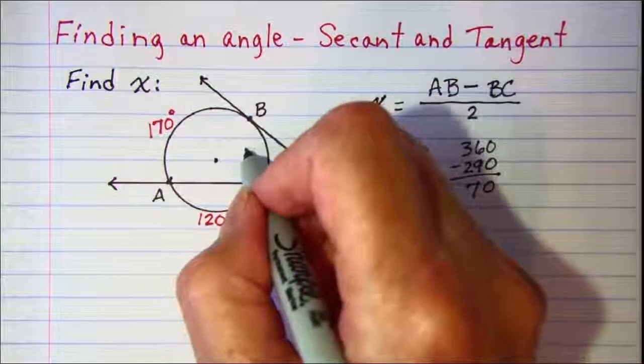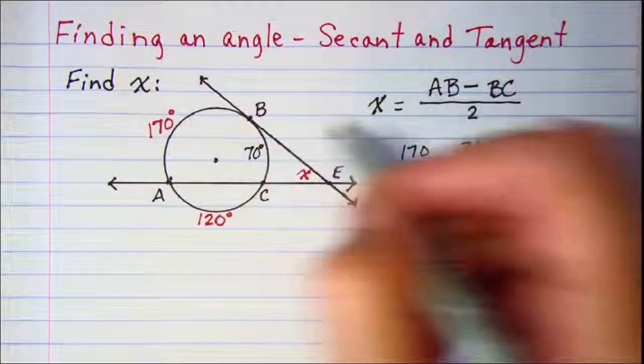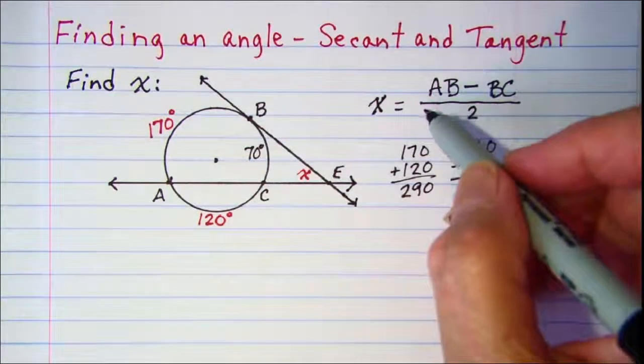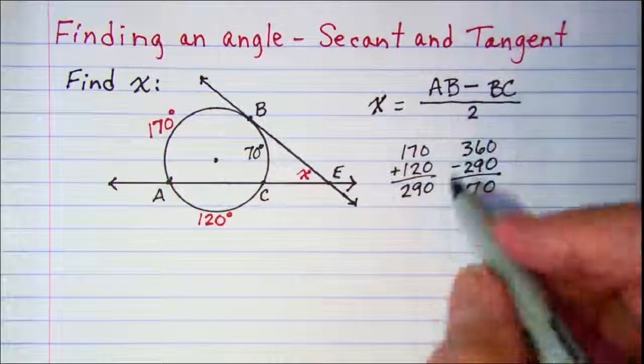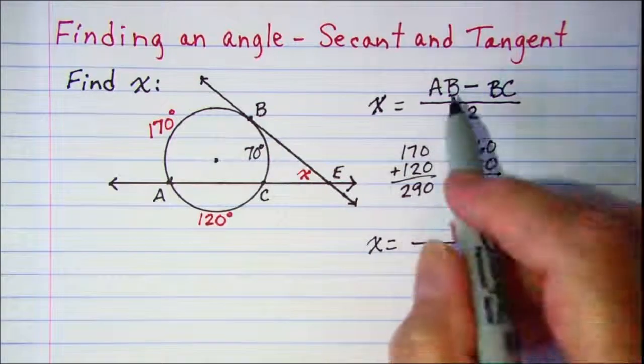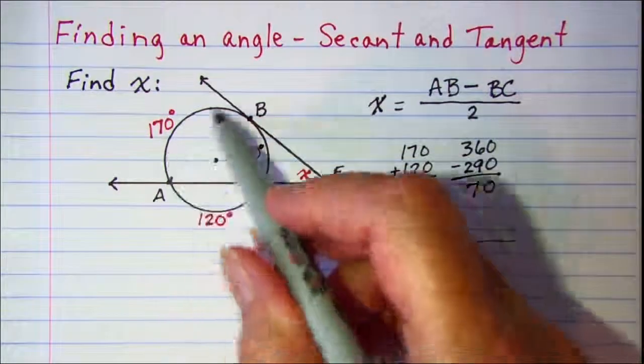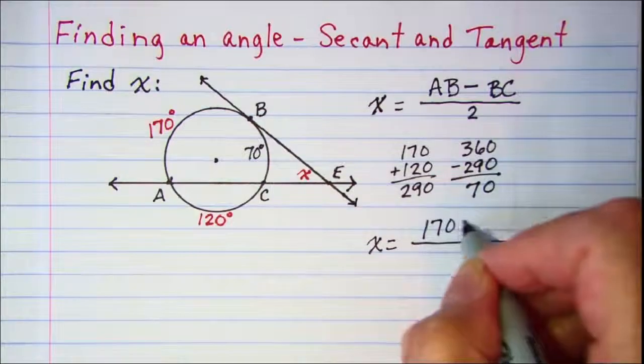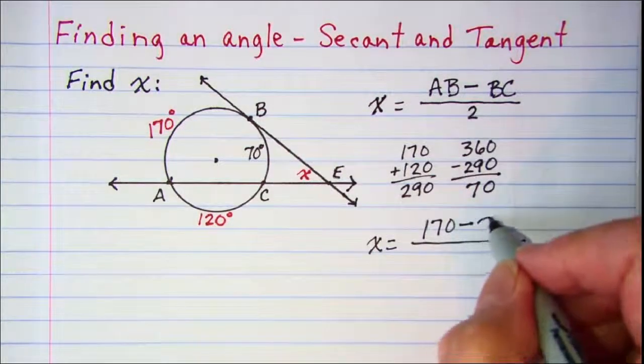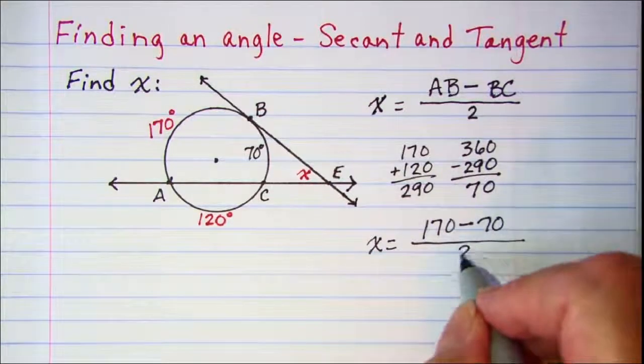So let me write 70 here. Now x then is going to be AB which is 170 subtract BC which is 70 divided by 2.